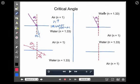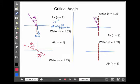But what happens when you go the other way? If I go from the water to the air, my light ray bends away from the normal. So as n goes down, you go away from the normal.